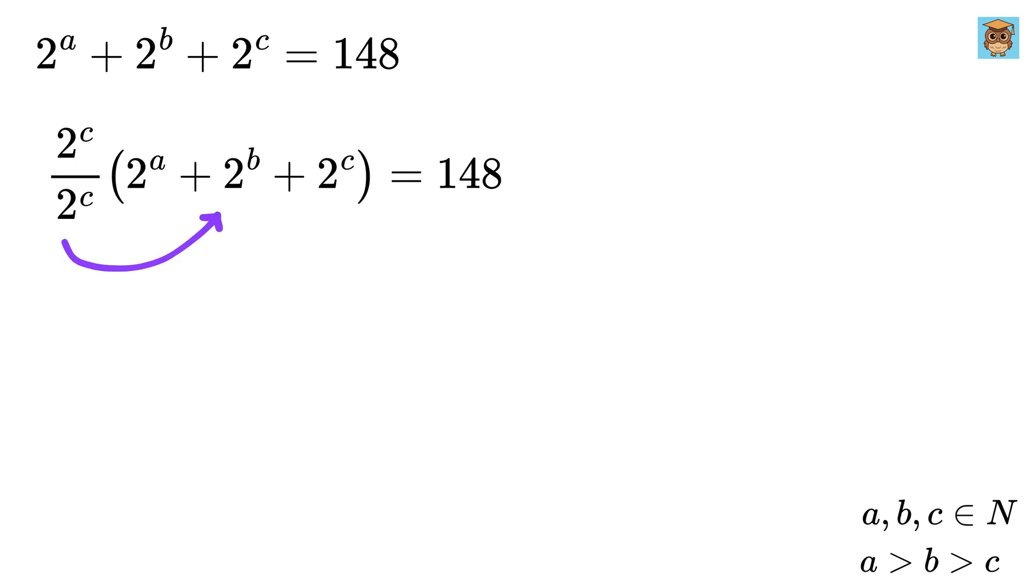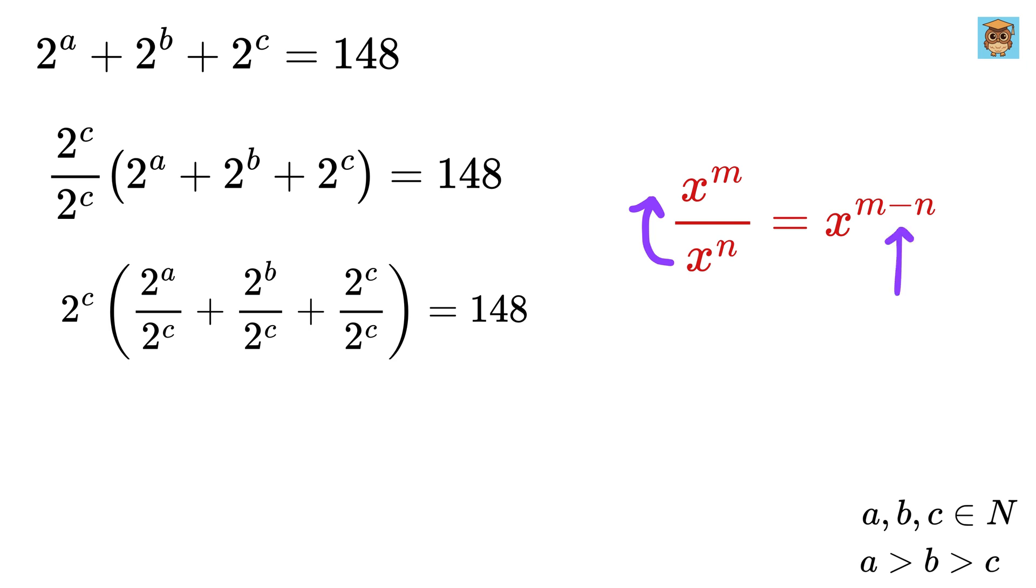So, we can take this 2 to the C here and divide it with each term individually. We get 2 to the C times 2 to the A divided by 2 to the C plus 2 to the B divided by 2 to the C plus 2 to the power of C divided by 2 to the power of C. Now, we have a power rule that says x to the M divided by x to the N equals x to the M minus N, which means we can take this to the numerator, but just put a minus sign here.